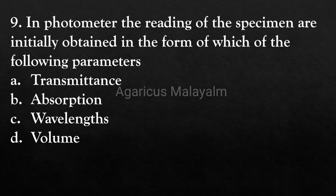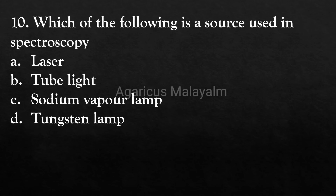Tenth question: Which light source is used in spectroscopy? Answer options: Option A - laser, Option B - tube light, Option C - sodium vapor lamp, Option D - tungsten lamp. Correct answer: Option D - tungsten lamp. The tungsten lamp is the light source used in spectroscopy.